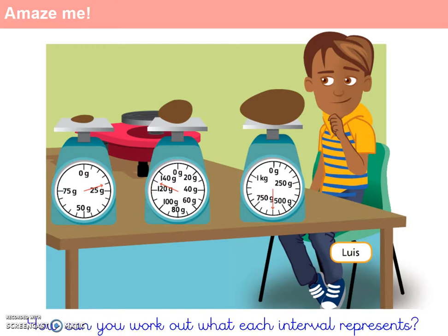For question 1a, we're asked how can we work out what each interval on these scales represents? Before attempting to answer that question, we're going to think about what we mean by the term scales and what we mean by the term interval. The scales are the things that the clay is being set upon, and the intervals are all those lines on those scales that tell us the different mass. So using that knowledge, how can you work out what each of the intervals on each scale represents?